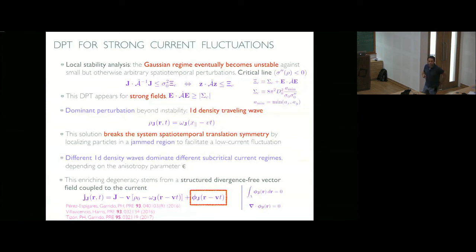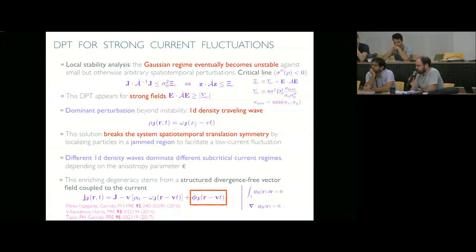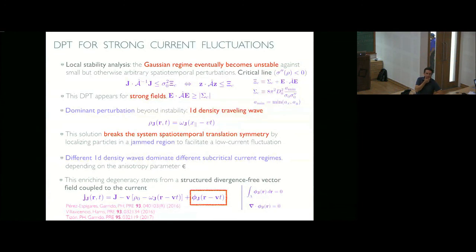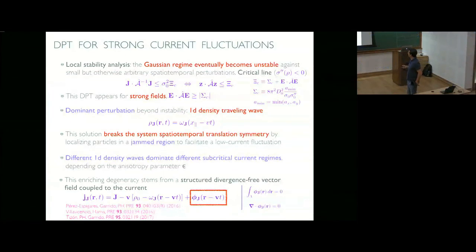Question: For very strong driving, does it still travel? The wave might stop because the velocity is of the wrong order, but there might still be a curl in the optimal profile currents. Question: Is the exclusion important? Answer: Yes. With standard random walkers without interaction, the mobility is linear, the second derivative of the mobility is zero, so there is no phase transition and nothing happens.